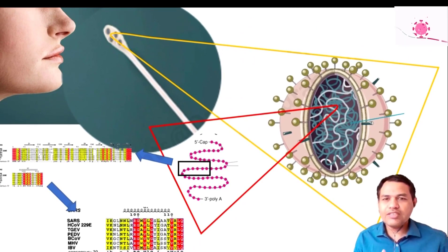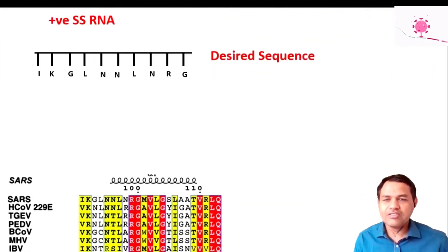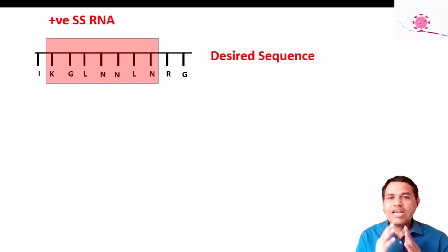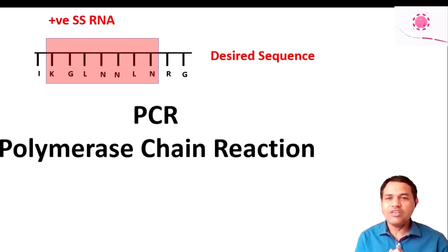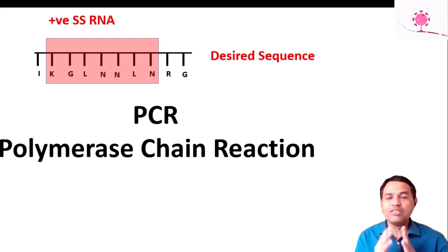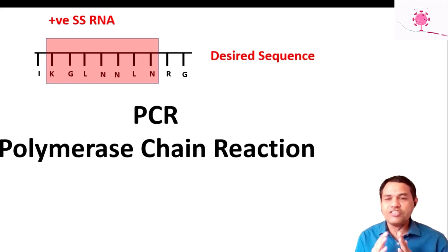From the swab sample, the technician extracts RNA using an extraction technique and identifies a specific desired sequence — for example, the sequence encoding ORF1A protein — to determine whether it is present in the sample. To detect this desired sequence quantitatively, we need to amplify it using PCR (polymerase chain reaction), which multiplies DNA into thousands or even hundreds of thousands of copies. However, PCR cannot amplify RNA directly, so we must first convert the RNA sequence into DNA.